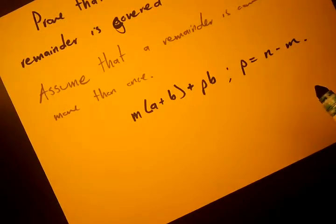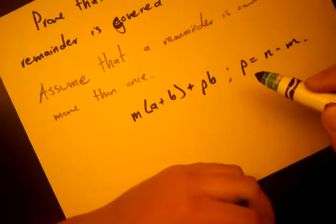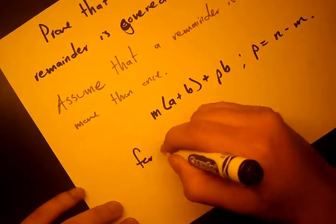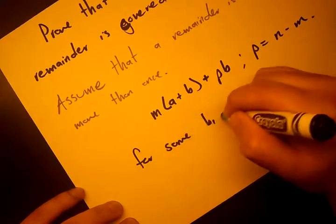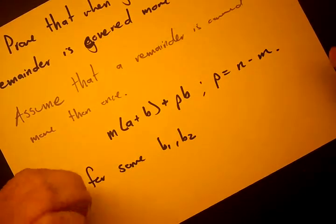What does it mean for a remainder to be covered more than once? That means that PB gives the same remainder more than once. For some B1 and B2, let's say we're going to go in the interval 0 to M.